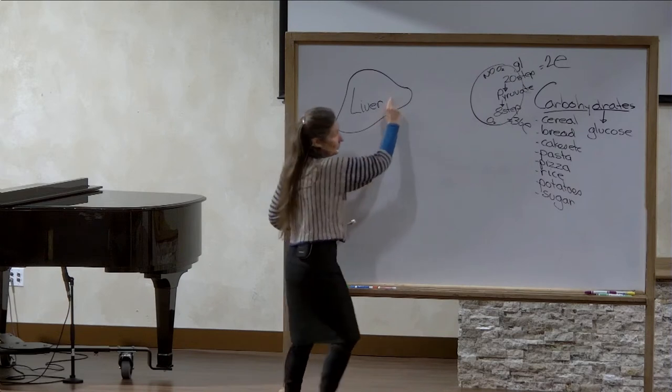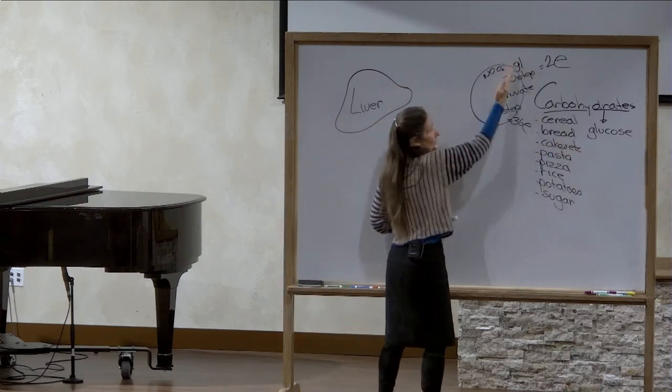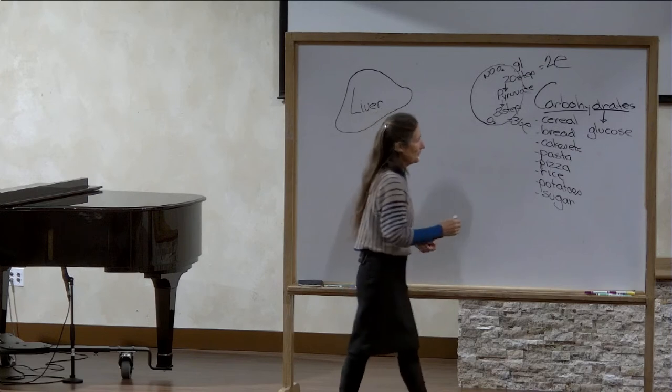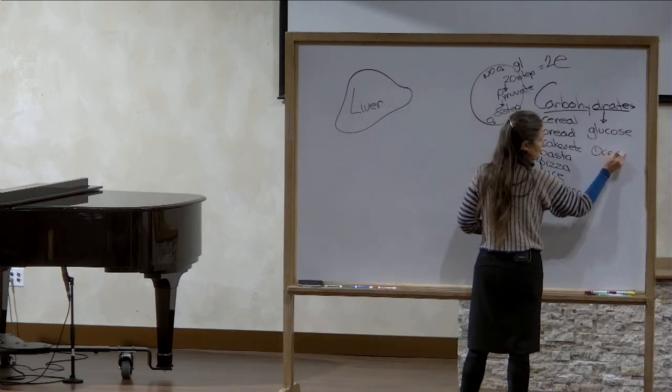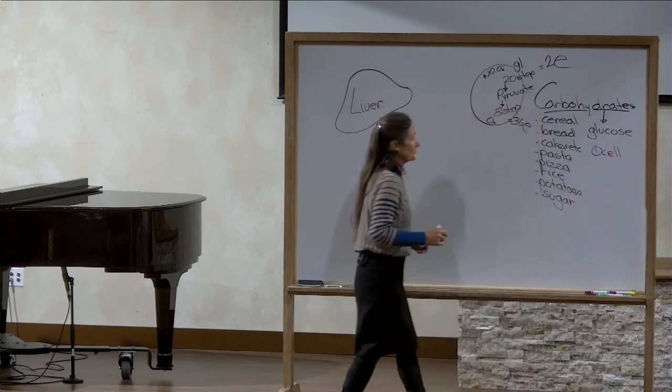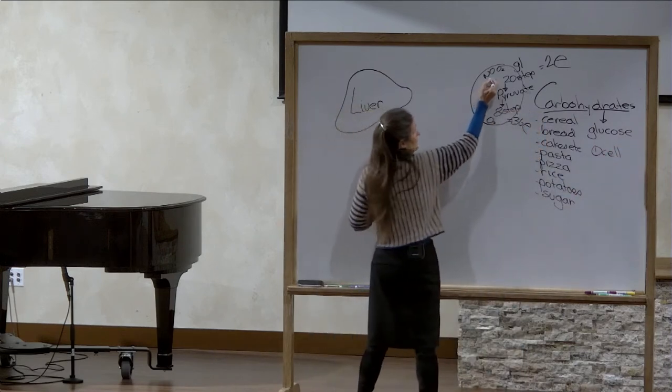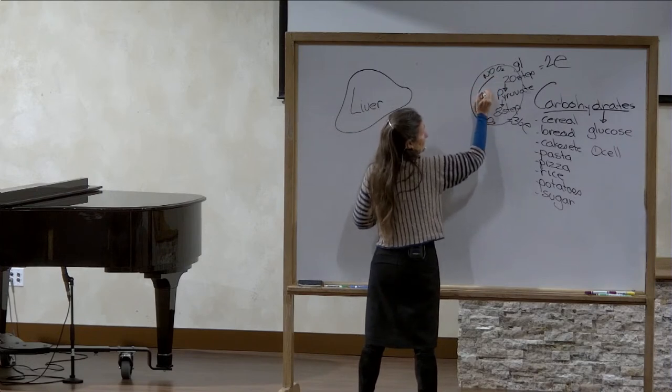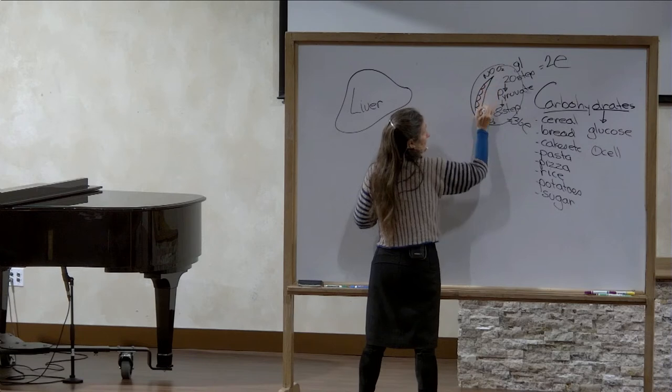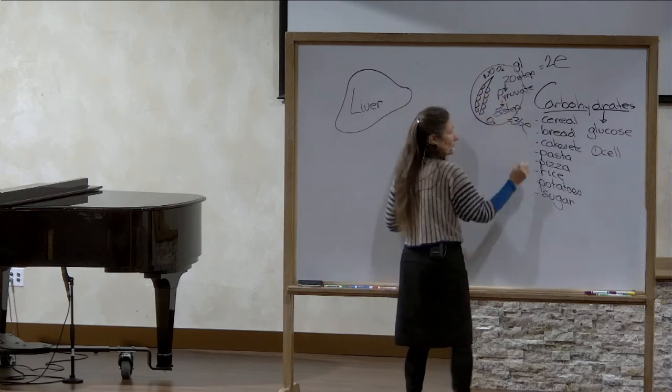The first place that the liver will send the glucose is through the pathways to produce energy. Number one goes to the cell. Now, we've still got a lot of glucose left over. The liver will cause it to be stored like a little bunch of grapes. These are little molecules of glucose, and they're called glycogen.